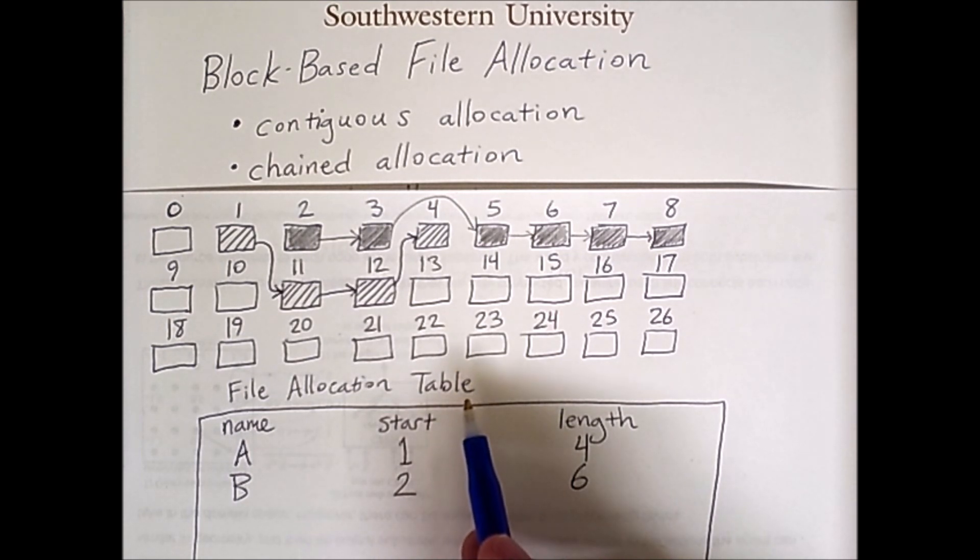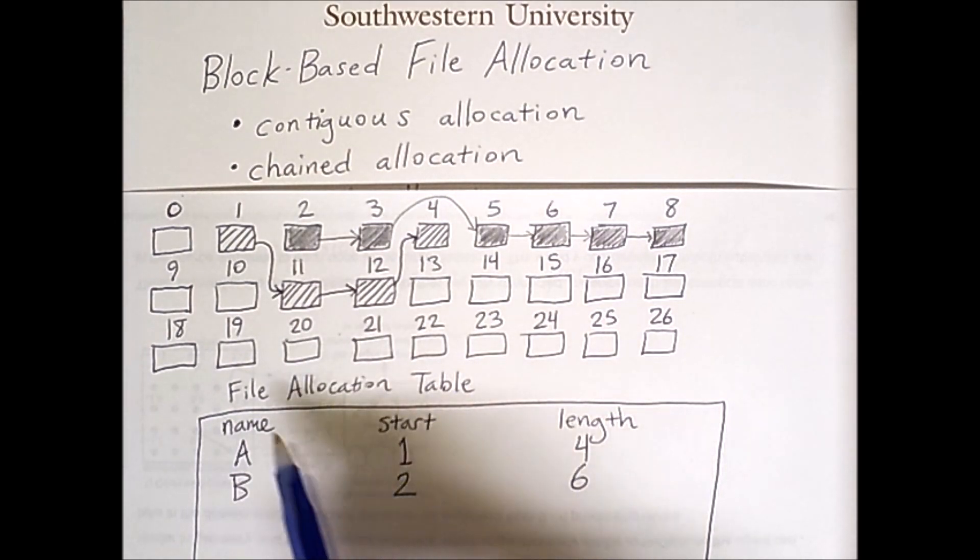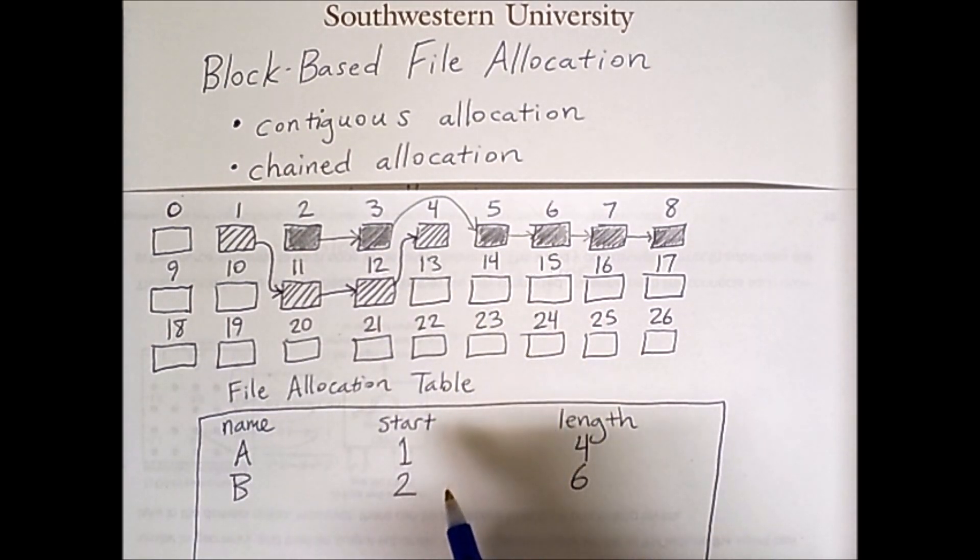However there is an operation we will occasionally do that is somewhat similar to compaction. It is called consolidation and essentially what it does is it moves all blocks of all files to be contiguously located on the disk. Though not necessary this is useful for increasing the speed of file lookup. The result of consolidating this disk would be the following.